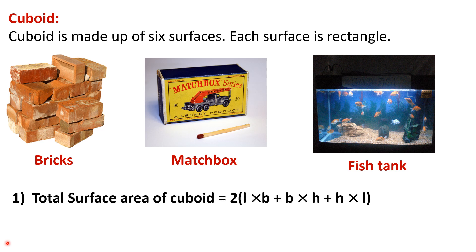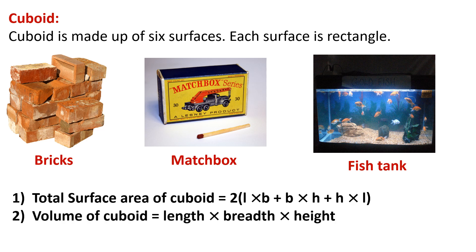The formula for total surface area of cuboid equals 2 × (lb + bh + hl), where l is length, b is breadth, and h is height. This is the total surface area formula for a cuboid.